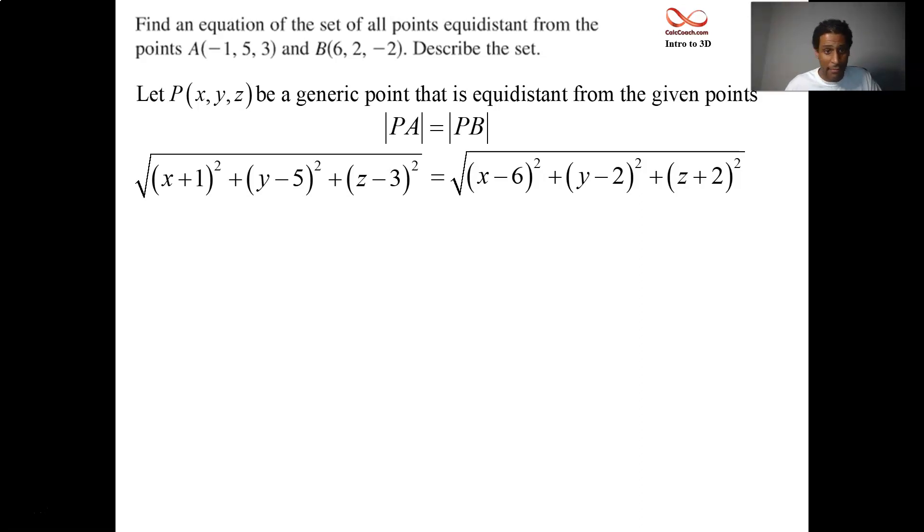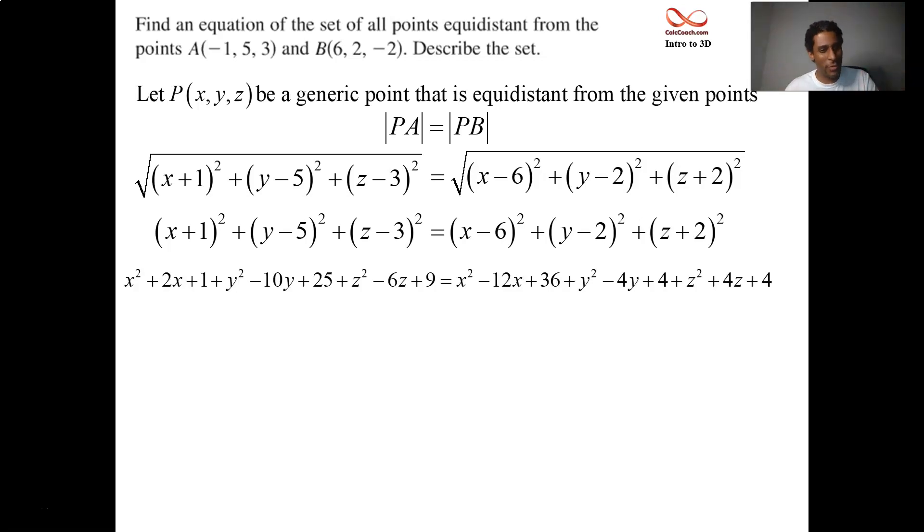How far is P from A? x minus (-1) squared, y minus 5 squared, z minus 3 quantity squared, square root. How far is P away from B? x minus 6 quantity squared, y minus 2 quantity squared, z minus a negative, so plus 2 quantity squared, square root. All points that satisfy this equation are equidistant between A and B. Very crude way to do it, but what are you going to do? So what are you going to do is your first algebra step: square both sides, get rid of those square roots. What are you going to do is your second algebra step? You can do it, it's a bit of a mess. Multiply out: x squared plus 2x plus 1, y squared minus 10y plus 25, you'll get it.